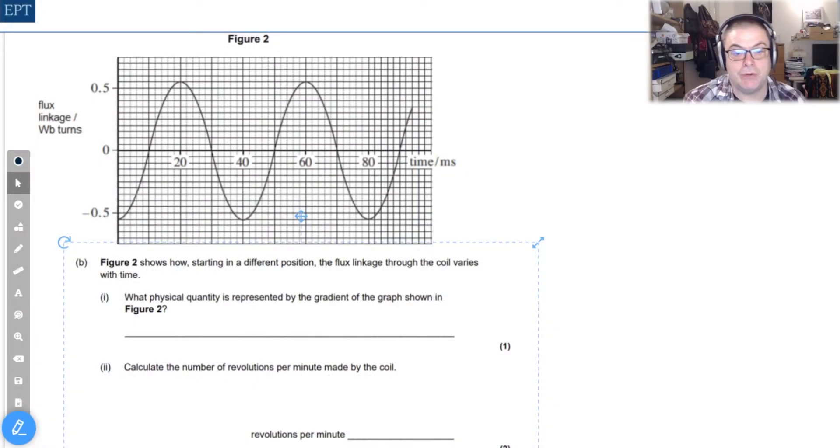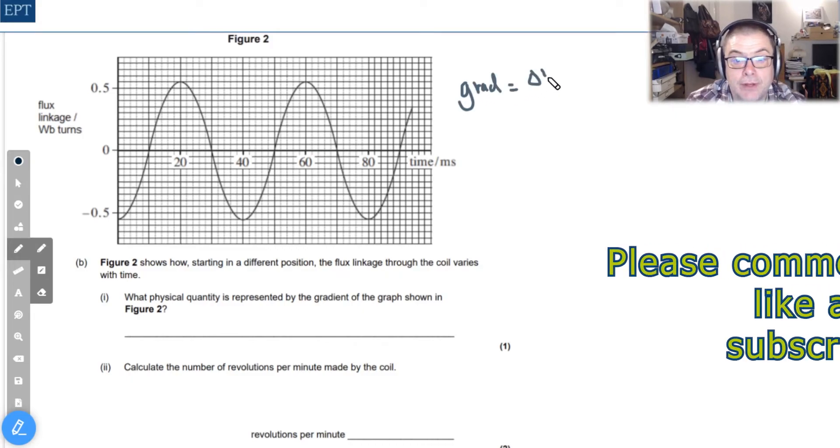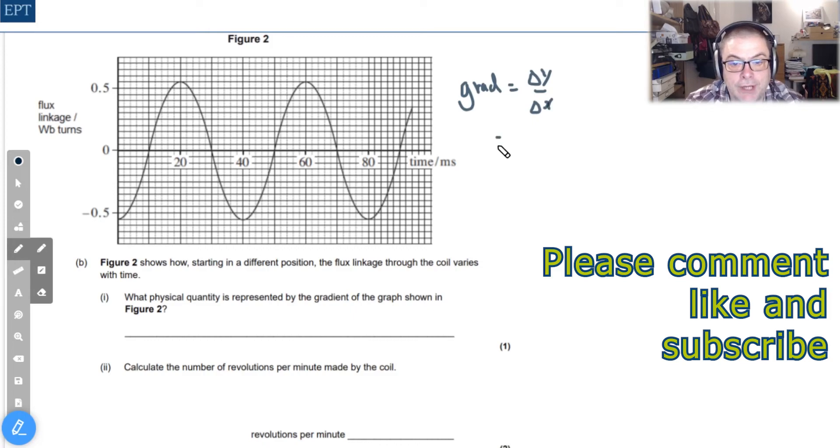So in this part of the question we're asked to work out what in fact that gradient represents. Well we know that a gradient is always going to be the change in y divided by the change in x. So let's look at what we've got on the axis.